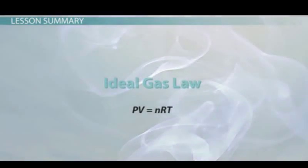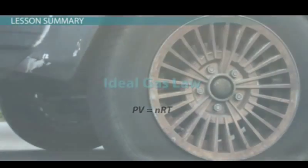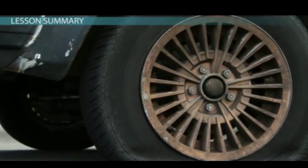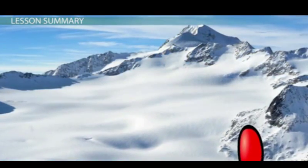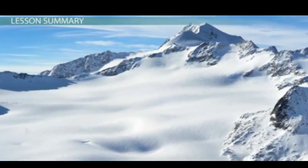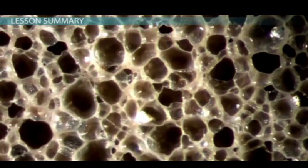The ideal gas law states that PV equals NRT. This equation explains why car tires become underinflated during winter. When the temperature drops, the volume of the air must drop as well.